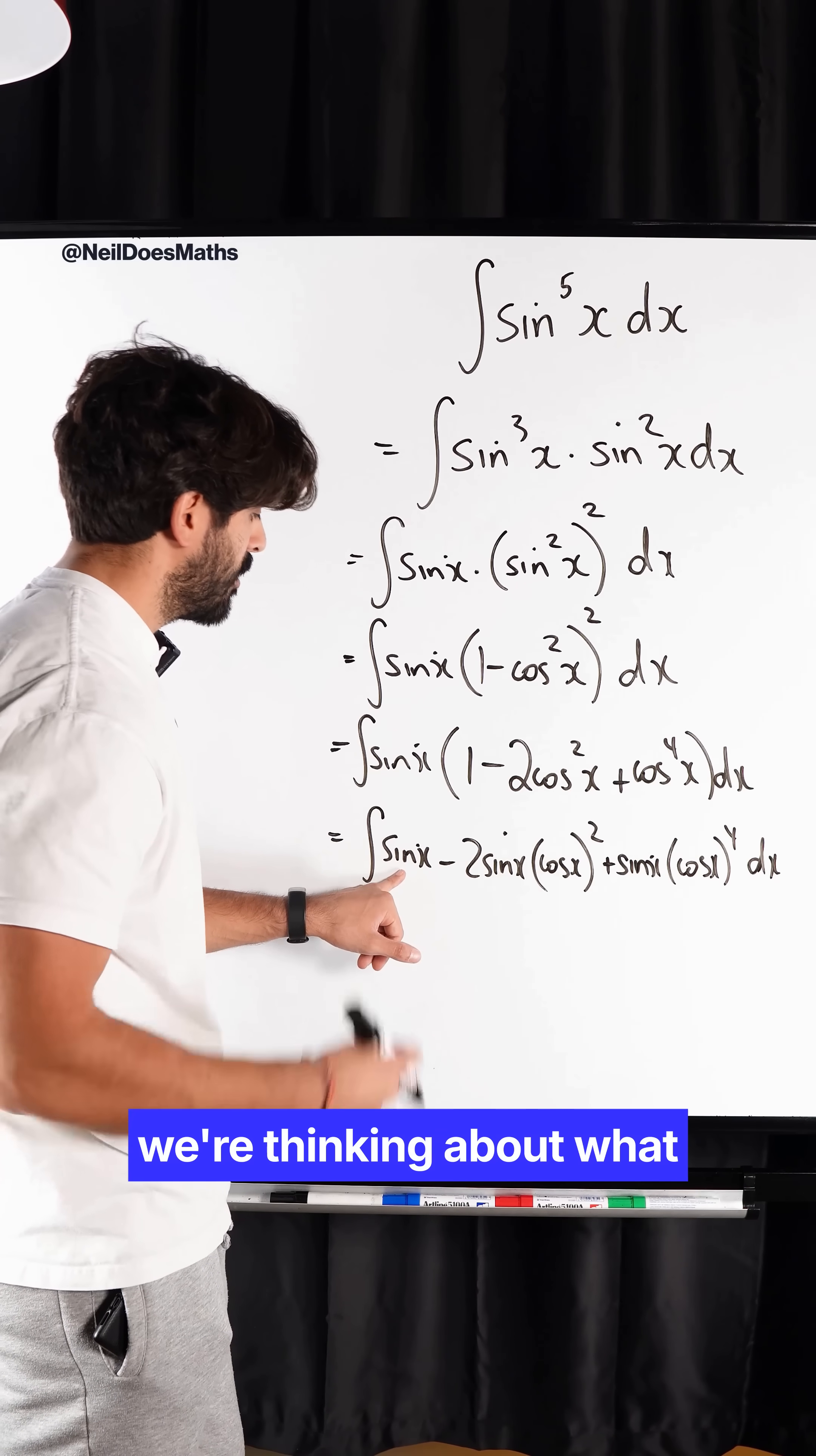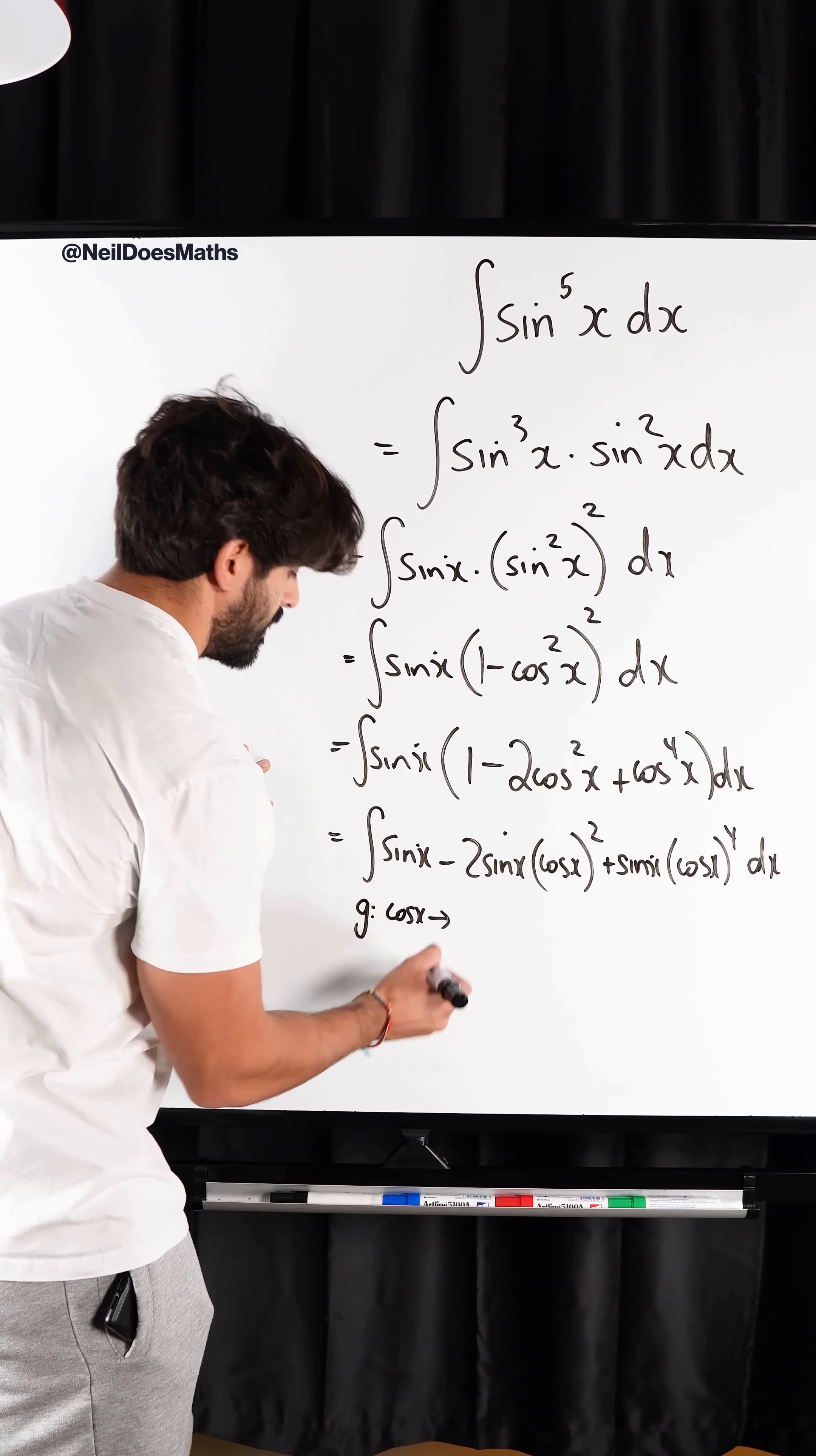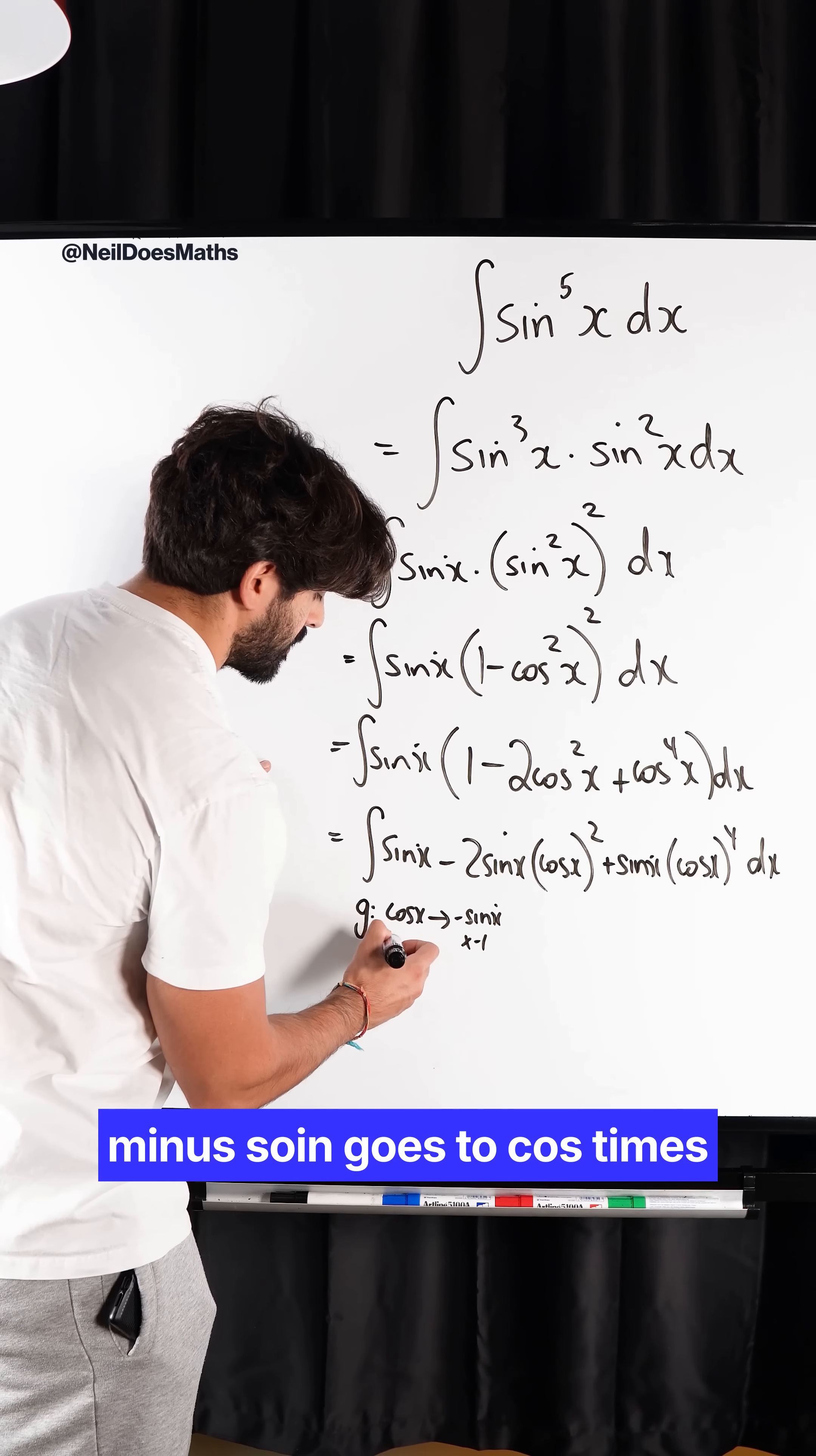So to integrate this, we're thinking about what would differentiate to sin. I make a guess. I'm thinking about cos. Now, cos actually differentiates to minus sin, so I have to times by minus 1. Minus sin goes to cos times by minus 1.